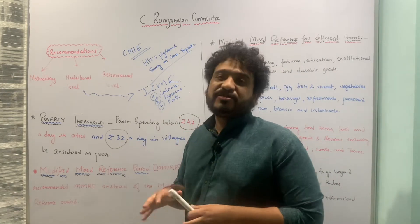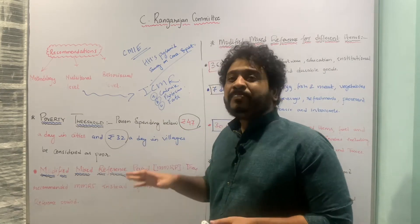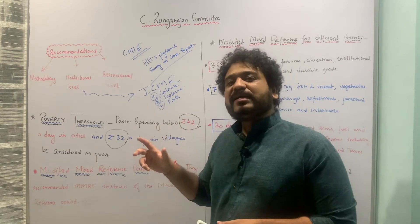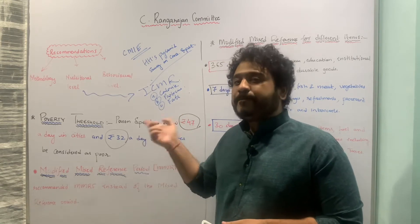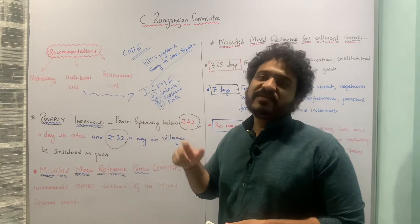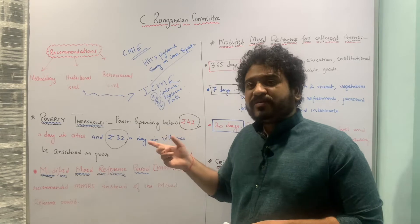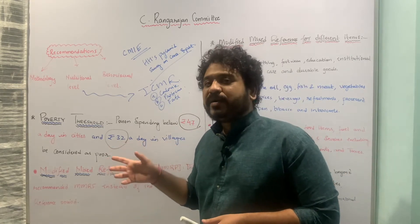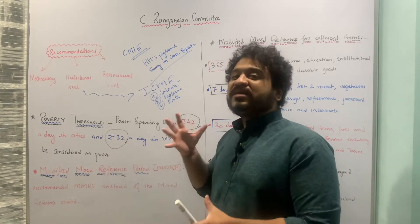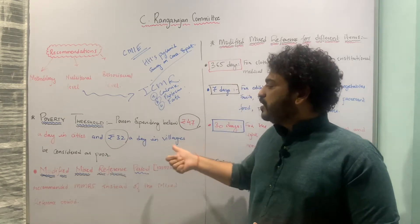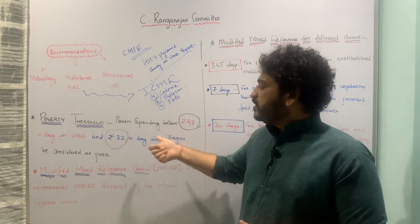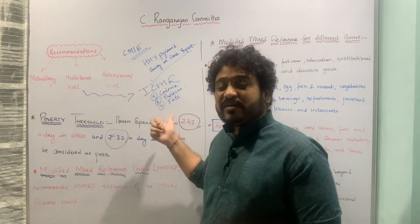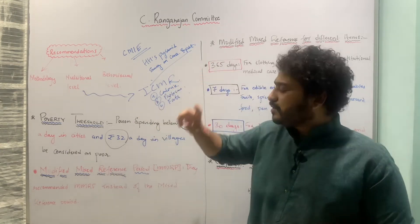With this underlying threshold, the poverty numbers changed drastically — they increased at a very unprecedented rate compared to the previous committee, which was the Suresh Tendulkar Committee. So the numbers changed significantly with respect to these poverty thresholds compared to those used by the Suresh Tendulkar Committee.